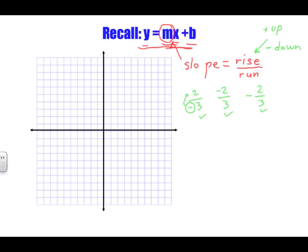We want to put the negative with the numerator because the numerator is our rise, and that rise can go up or down. If the whole slope is positive, the rise goes up; if the whole slope is negative, we count going downwards. The run will always go to the right.